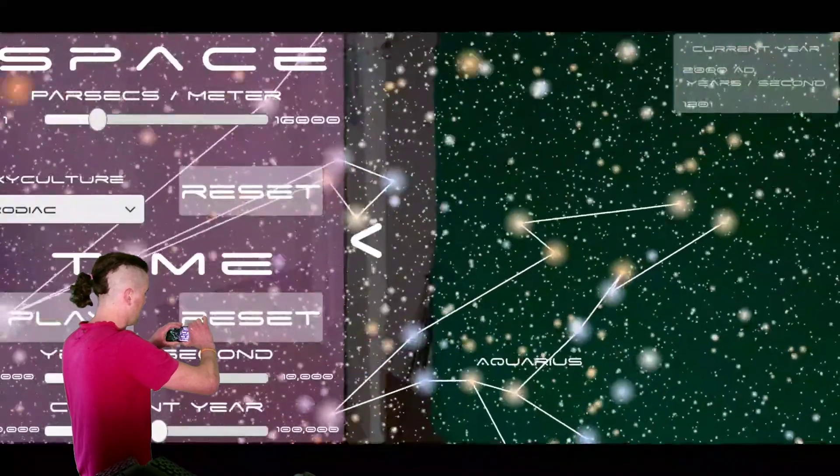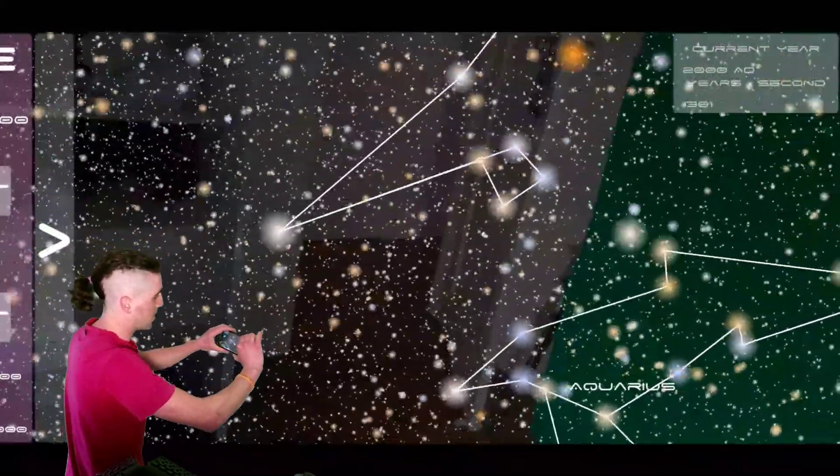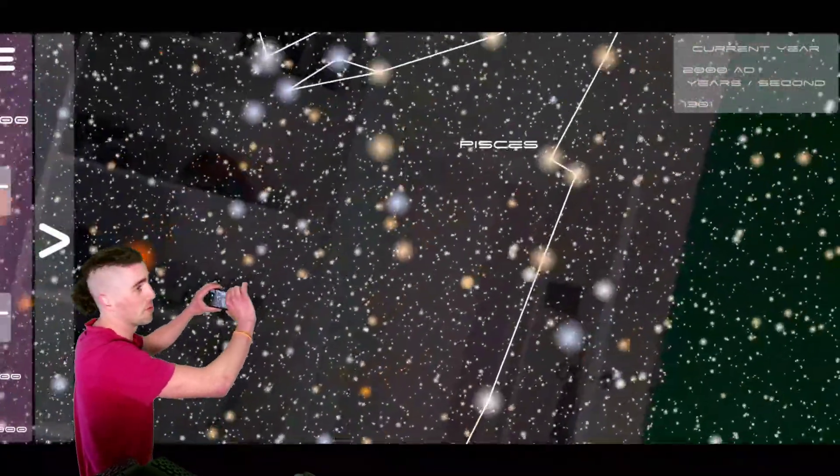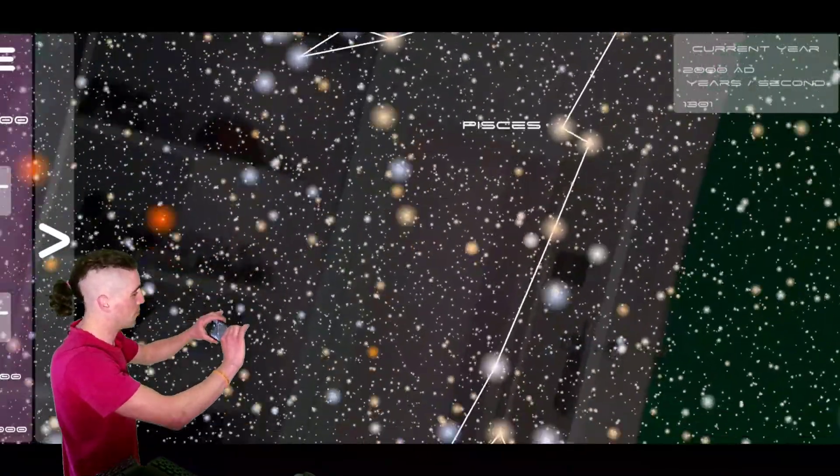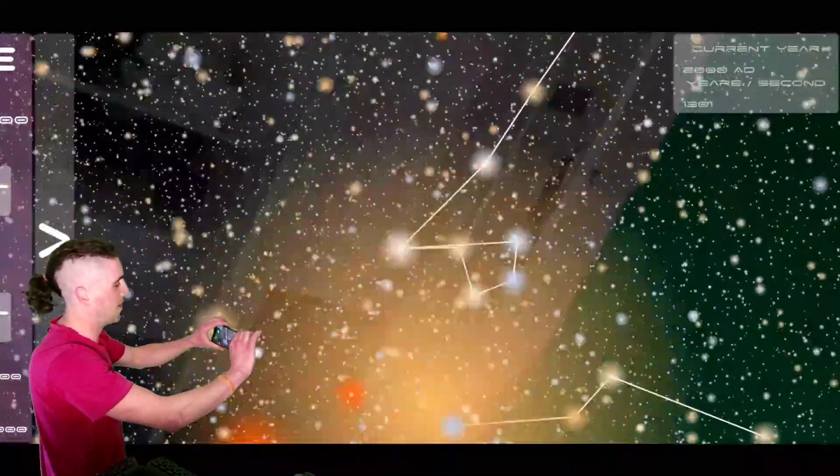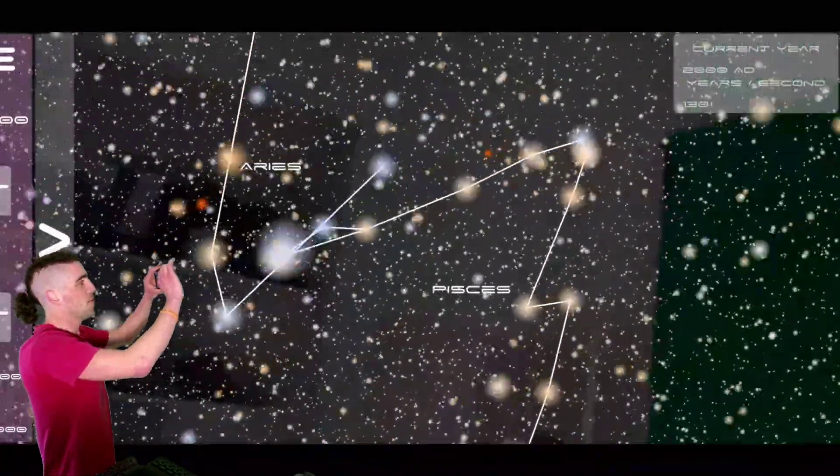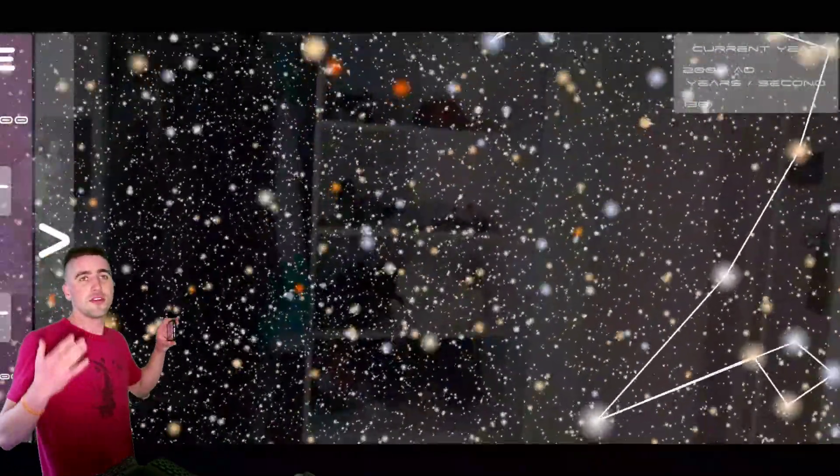Of course, if I bring the scale up a bit, we can start to see that parallax effect. For example, in the Pisces system, which stars are in front of others, et cetera. There's a few other interesting things we can do with this particular database we'll be using.